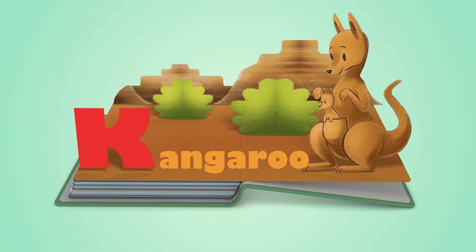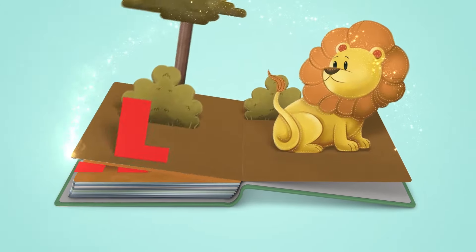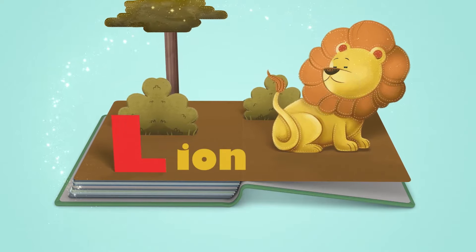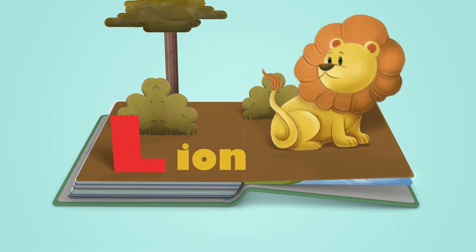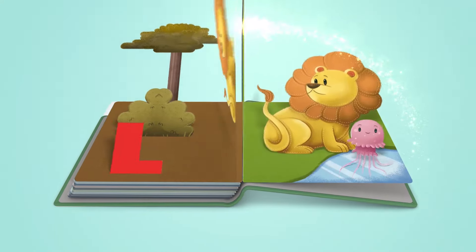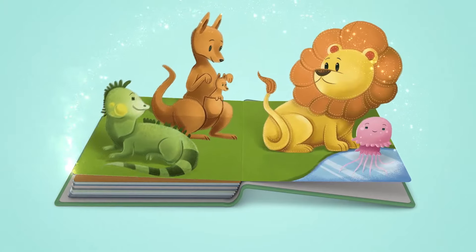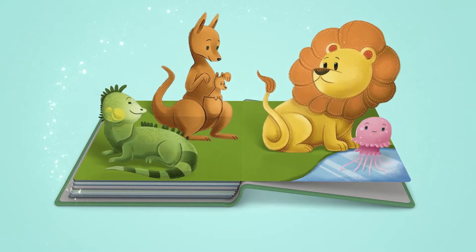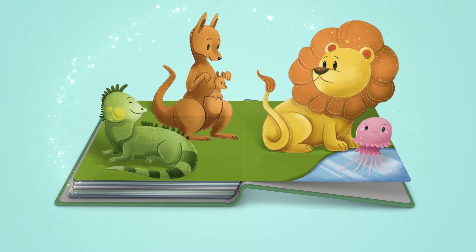K is for Kangaroo, c, Kangaroo. L is for Lion, l, Lion. They are so amazing!